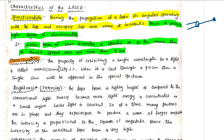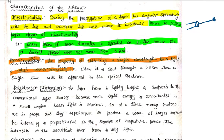The second characteristic is Monochromacity. Mono means single, referring to a single wavelength. The property of exhibiting a single wavelength by light is called monochromacity. When laser light is sent through a prism, then a single line will appear in the optical spectrum.